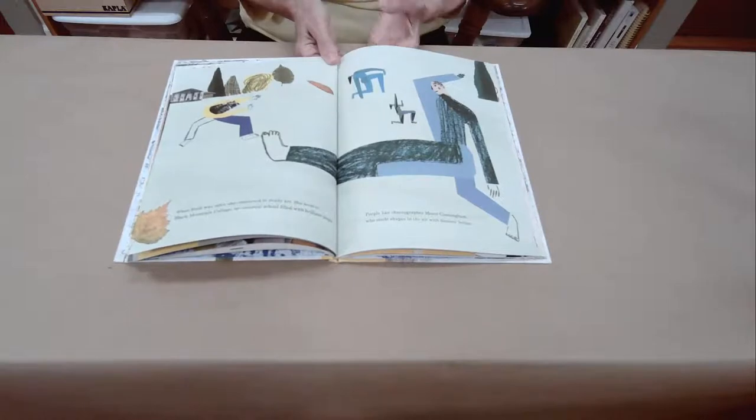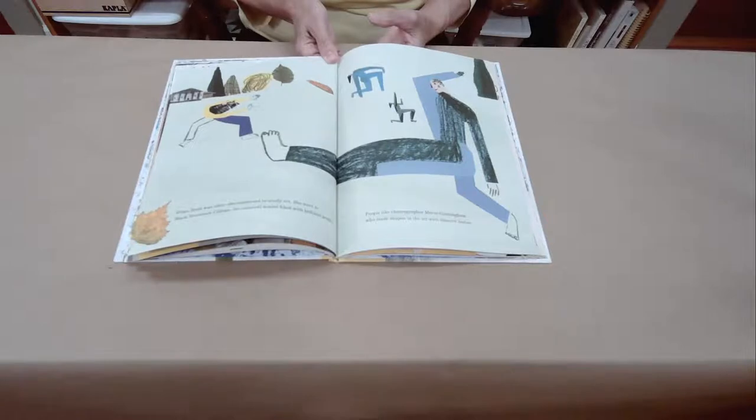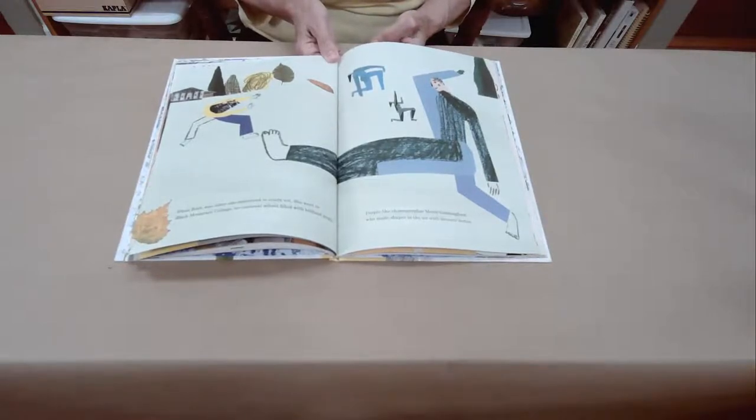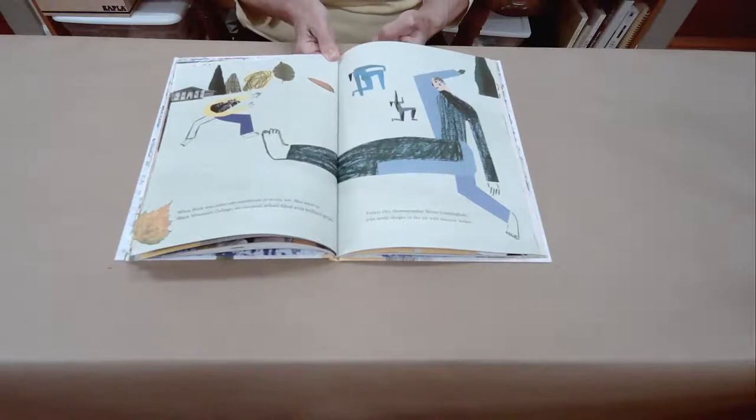When Ruth was older, she continued to study art. She went to Black Mountain College, an unusual school filled with brilliant people. People like choreographer Merce Cunningham, who made shapes in the air with dancers' bodies. Look at all the different shapes.